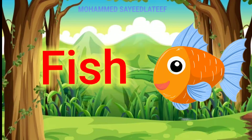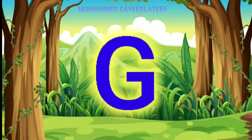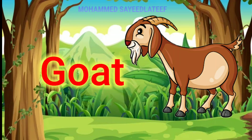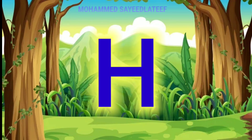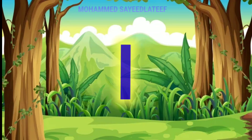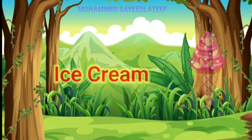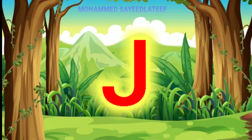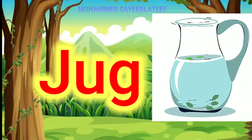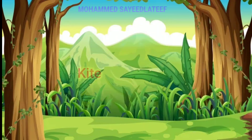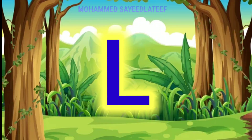F for fish, G for goat, H for hen, I for ice cream, J for jug, K for kite.